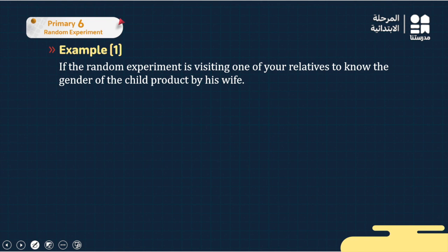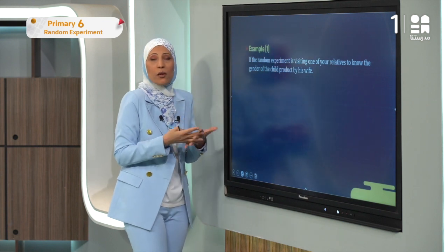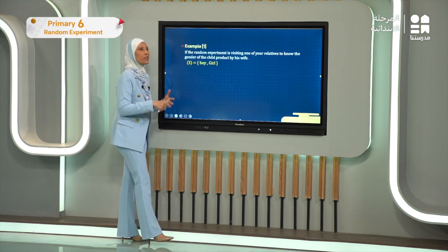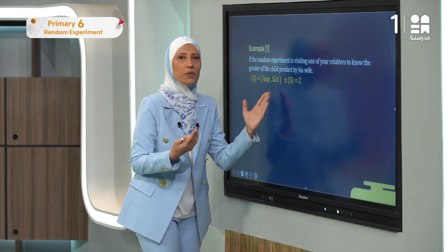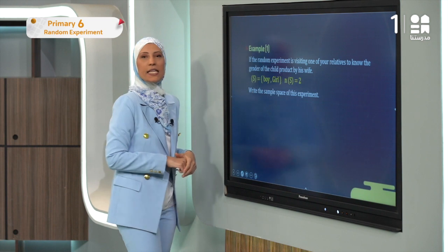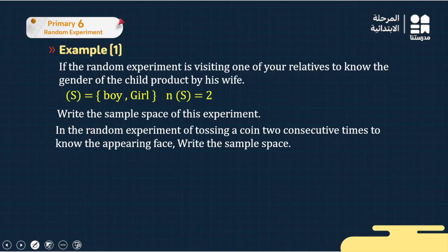Exercise B: the random experiment is visiting a relative to know the gender of their newborn child. The sample space has two elements — it can be boy or girl — so n(S) = 2. Next: write the sample space of the random experiment of tossing a coin two consecutive times.